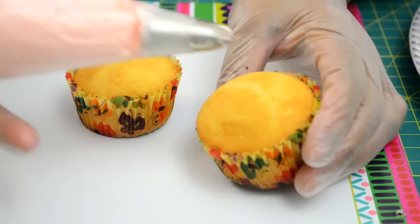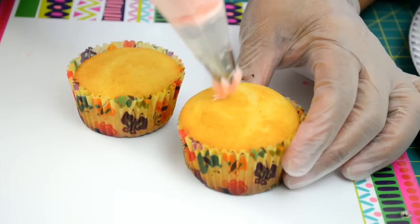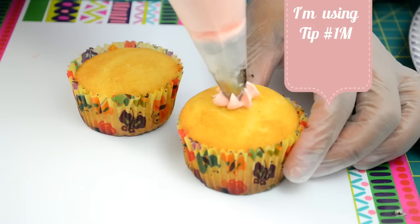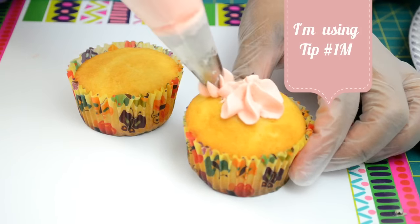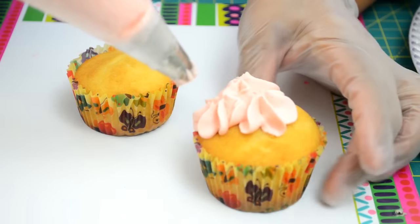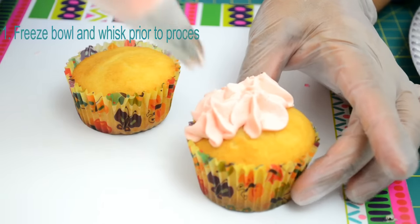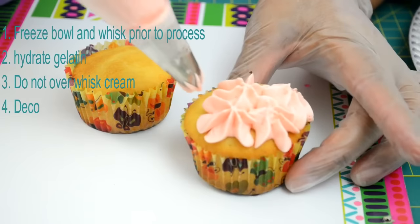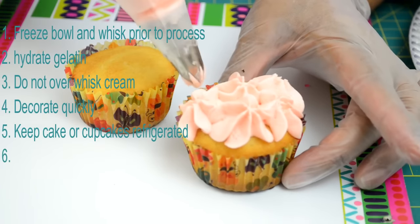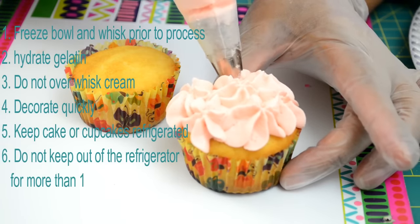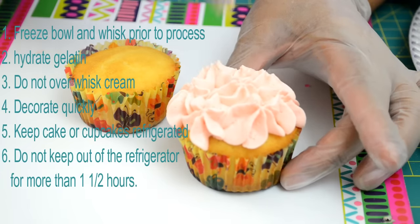While I decorate these cupcakes, I will give you some tips to make a great stabilized whipped cream. Number one, freeze mixing bowl and whisk for about 20 minutes. Number two, hydrate the gelatin first. Number three, do not over whisk the cream.